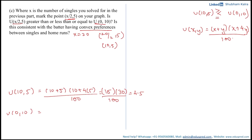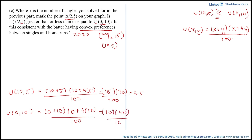Now let's calculate the utility at 0 comma 10, where x = 0 and y = 10. Substituting gives (0 + 10)(0 + 4×10) / 100 = 10 × 40 / 100 = 4.